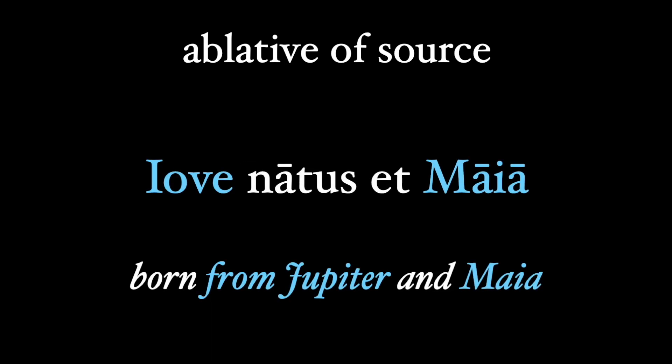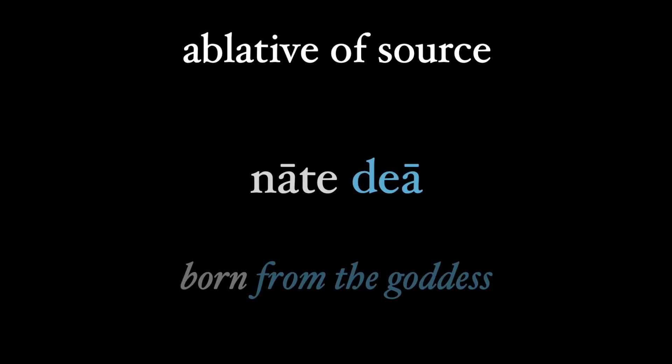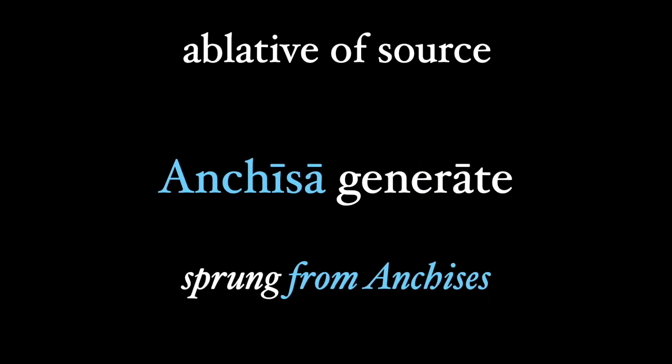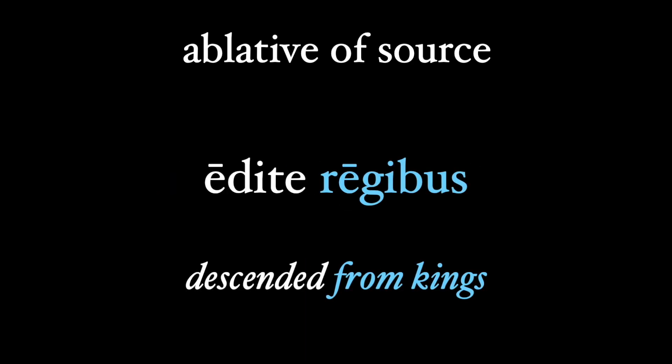Mercury is referred to with the phrase Iove natus et Maia — born from Jupiter and Maia. In the Aeneid, Aeneas is frequently referred to with an ablative of source, like nate dea — born from the goddess, Venus being his mother. Or Anchisa generate — sprung from Anchises. Or Mycenas is described as editus regibus — descended from kings.